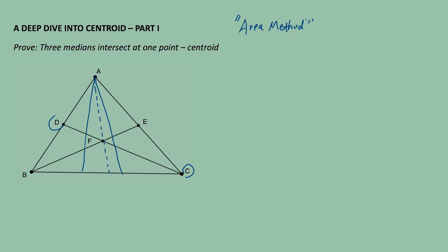Before we get started, let's look at an example that will be very helpful for understanding the proof. This example is about the area of a triangle. We have a triangle, and I draw a line in the middle to split the triangle's area into S1 and S2. Let's assume the length of one part is x and the other is y. The question is: what is the ratio of S1 to S2?